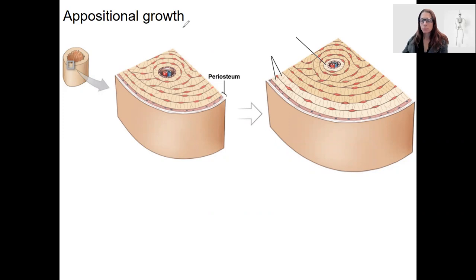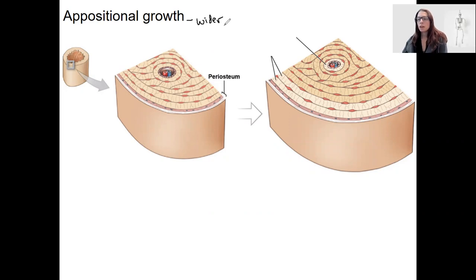In addition to growing longer, bones also need to grow wider as the body grows. Appositional growth is when bones grow wider. This occurs when matrix is added to the outside layers faster than it's being resorbed.